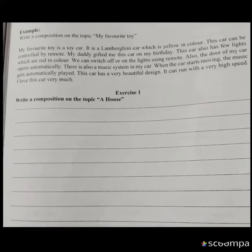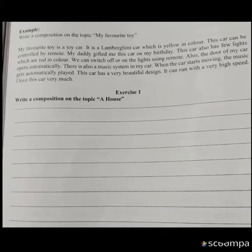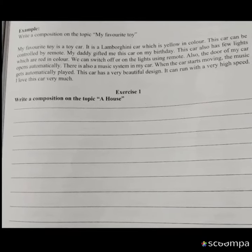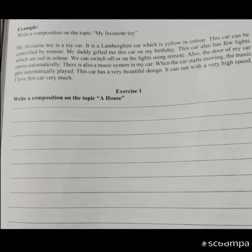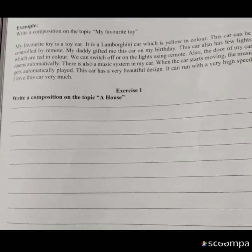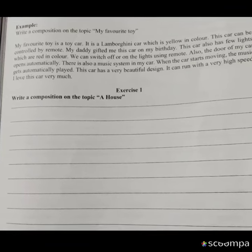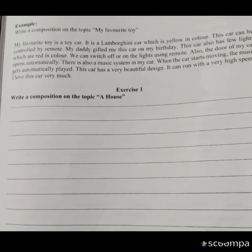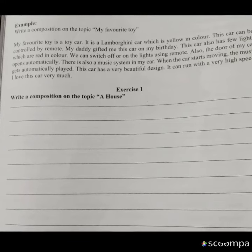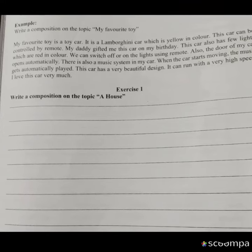Down you can see exercise 1, children — write a composition on the topic 'a house.' So now this you have to write by your own. You have to describe your house. And don't write in points; write in a paragraph.